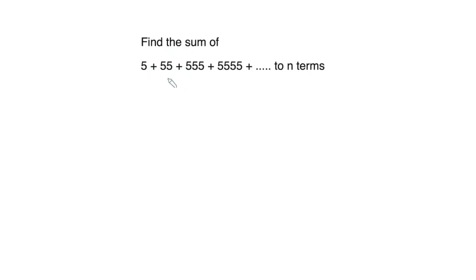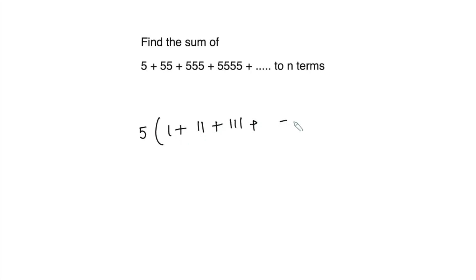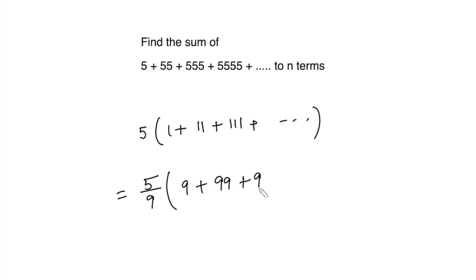Find the sum of the series 5 plus 55 plus 555 and so on up to n terms. This sequence is not a GP or an AP, but if we take 5 common we can write it as 1 plus 11 plus 111 and so on. If we multiply and divide by 9 we get 5 over 9 times 9 plus 99 plus 999 and so on up to n terms.